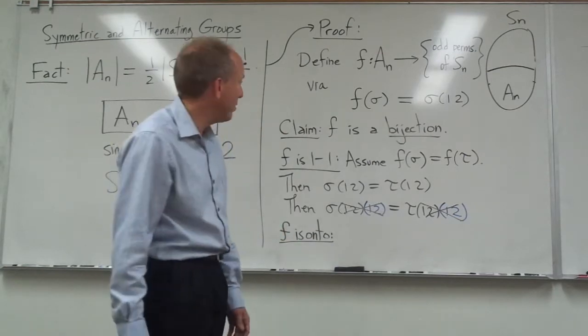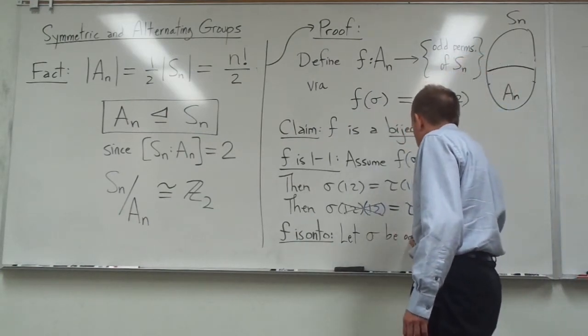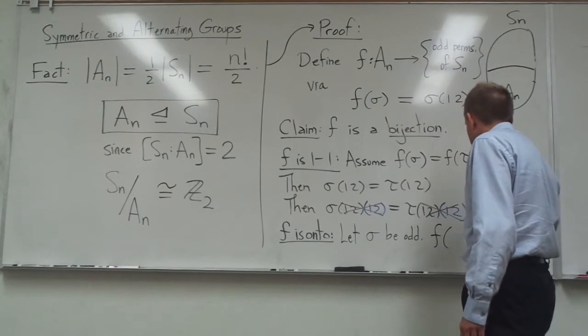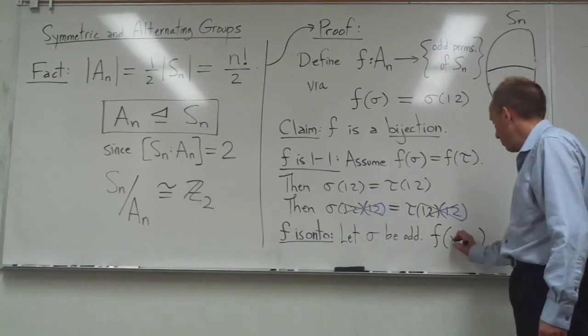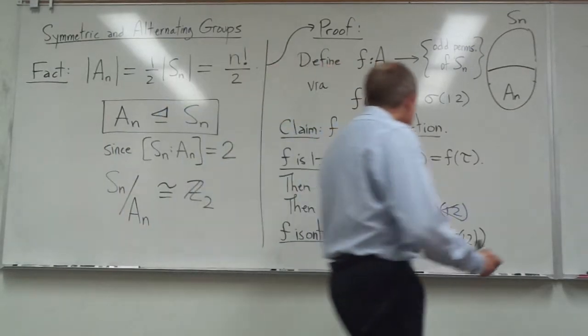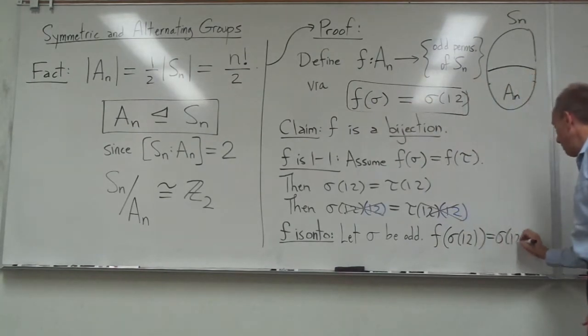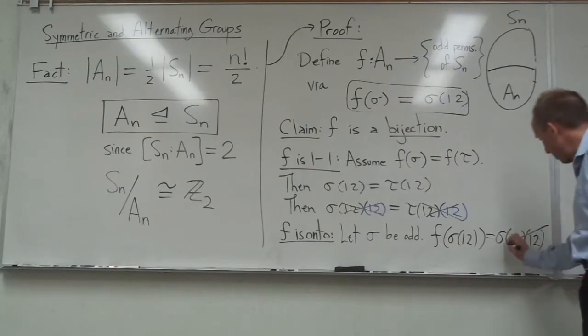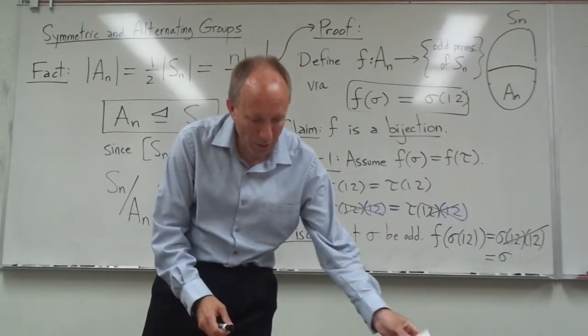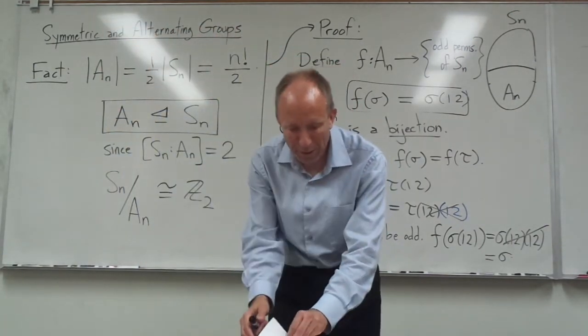So, let's suppose I want to show that F is onto. I'm just going to grab something that's odd over here. Let sigma be odd. And I need to find a preimage to it. Well, that means I need to find something that's even right here. And the way I'm going to do that is I'm going to take my odd sigma and add one transposition to it. It's so clever. All I have to do. What is F of sigma times one two? Well, F of anything is just obtained by taking whatever you plugged in and tacking another one two onto it. And now the one two's cancel and you end up with sigma again. So, it's no accident that your alternating group is half of your symmetric group. It's a subgroup of index two.